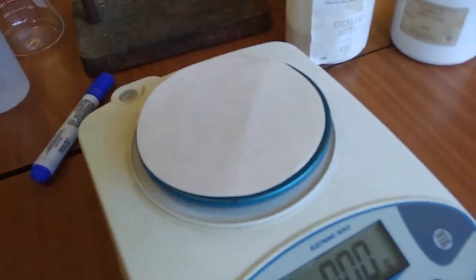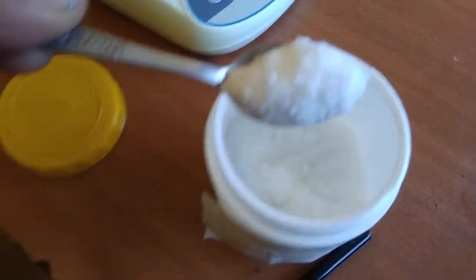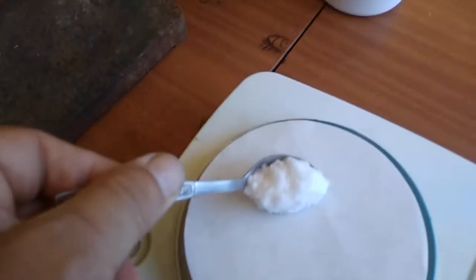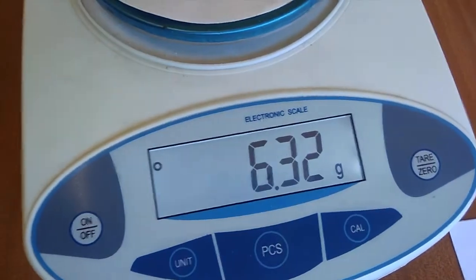We need to take some oxalic acid. You'll see it looks like sugar. We want to make sure it's crushed, not in chunks. Let's get approximately a teaspoon of it and put it carefully on our scale.